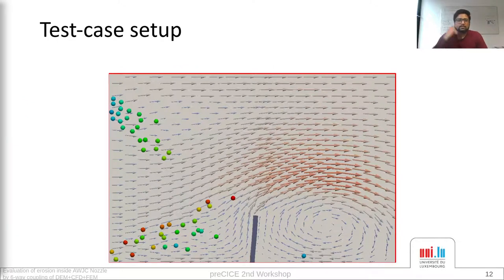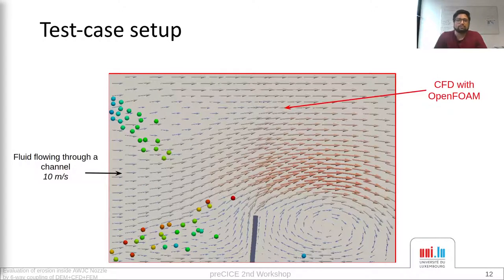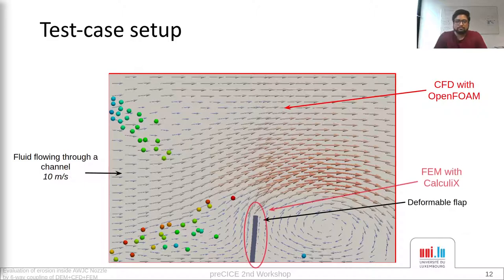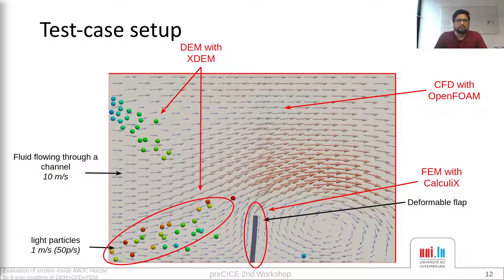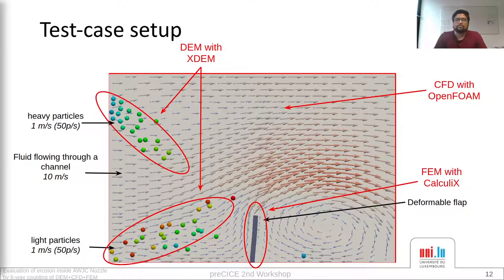Now we'll see the test case setup for 6-way coupling. We start from the perpendicular flap case setup provided for the 2-way OpenFOAM and Calculix coupling. The OpenFOAM and Calculix setup stays the same. We have the fluid entering from the left solved by OpenFOAM, the deformable flap solved by Calculix, and particles solved by XTM. We have light particles entering from the bottom and heavy particles entering from the top. Some of you who attended the first PreCICE workshop would have already seen results presented by my colleague Albon Rosso, but at the time he was using DEL2 instead of Calculix.